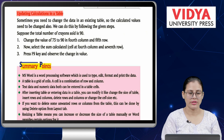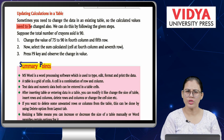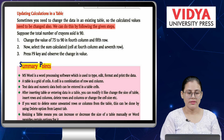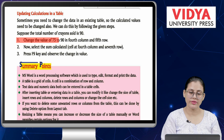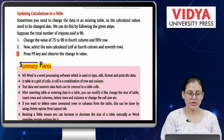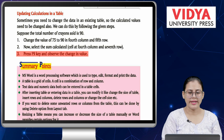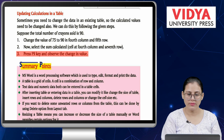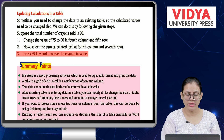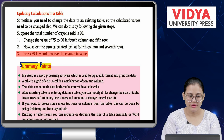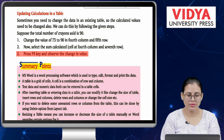Updating calculations in a table. Sometimes you need to change the data in an existing table, so the calculated values need to be changed also. For example, if the total number of crayons sold changes: Number 1 — change the value (e.g., 75 to 90) in the fourth column and fifth row. Number 2 — select the sum calculated cell at fourth column and seventh row. Number 3 — press F9 key and observe the change in value.